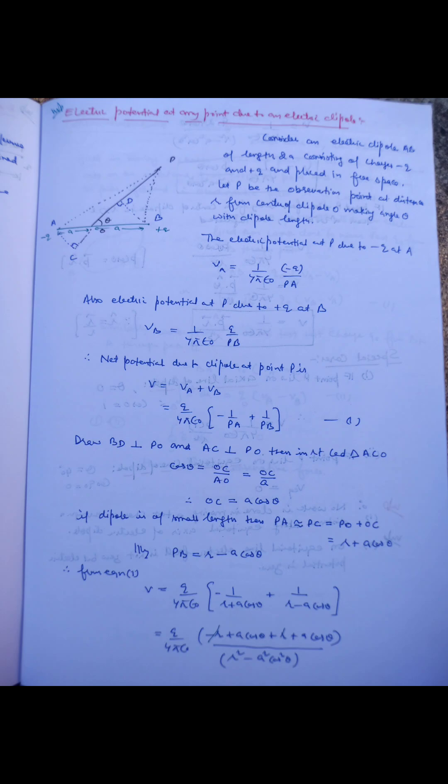We will find electric potential at any point at angle θ due to an electric dipole. It is equal to V = 1/(4πε₀) × (p⃗ · r̂)/R², where p⃗ is the dipole moment and R is the position vector magnitude of the point.